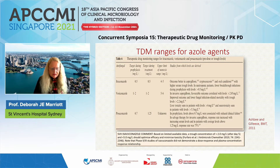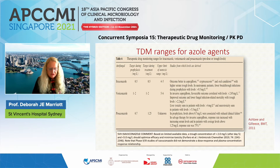Here you can see the azole therapeutic drug monitoring ranges we aim to achieve. For voriconazole, the efficacy concentration target is 1 to 2 and the toxicity concentration is around 5 to 6. For posaconazole, the trough for prophylaxis is 0.7, for treatment 1.5, and the upper concentration for toxicity is uncertain but probably around 4 to 4.5.